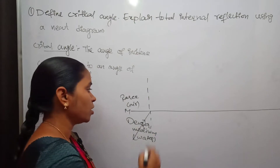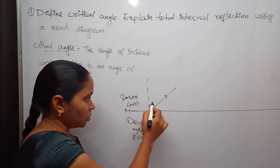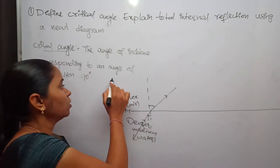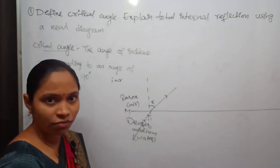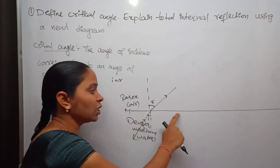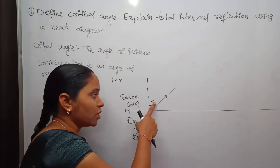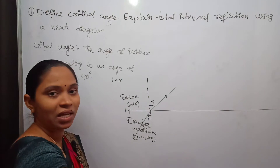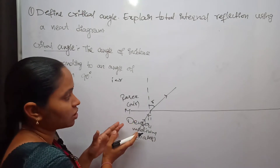Whenever light travels from the denser medium to the rarer medium, the angle of incidence will be less than the angle of refraction. The angle made by the incident ray with the normal to the interface is known as the angle of incidence, and the angle made by the refracted ray with the normal to the interface is known as the angle of refraction.